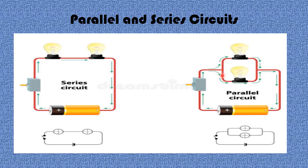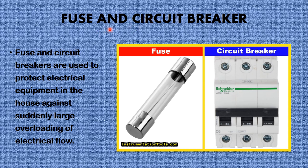In a parallel circuit, if there is an interruption in one path, that bulb will go off because the electron path is cut off. However, as long as the other path is not interrupted, the other bulb will remain on. The electrons will flow to the other path, keeping that bulb lit. In most houses, electrical connections are usually in parallel so that an interruption in one path doesn't affect the others.